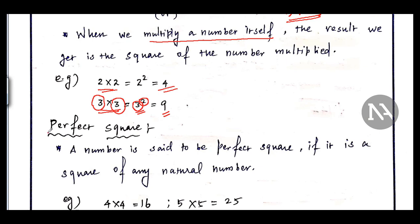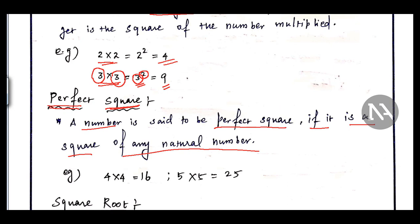What is a perfect square? A number is said to be a perfect square if it is the square of any natural number. For example, 2.1 — if you take the square of 2.1, it also gives a square, but 2.1 is not a natural number. 2 is a natural number; 2.1 is a fractional value.